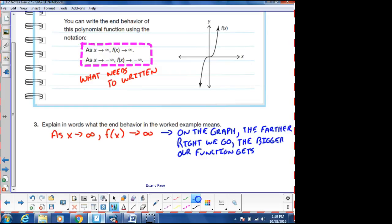Conversely, as we go to negative infinity, and f of x is going to negative infinity, so if we switch those around, on the graph, the farther left we go, the smaller our function gets.